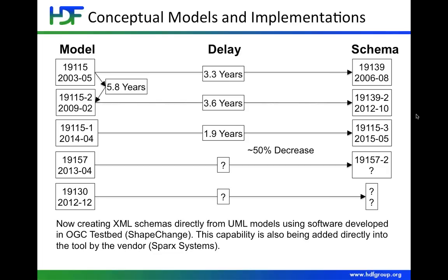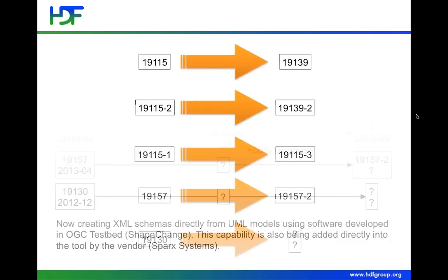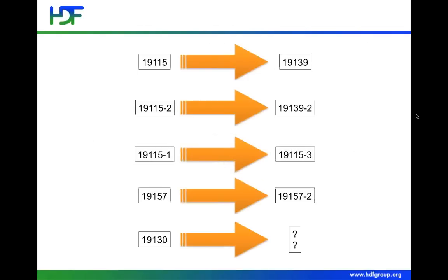The goal of all this is to make implementations faster and actually make the time period between the conceptual model and the implementation essentially zero, so that we can test implementations quickly while the standard is being developed. Another approach ISO has used in the past is that each conceptual standard had its own implementation standard — each of those boxes involves a team of people that get together, discuss things, write documents, and go through reviews.